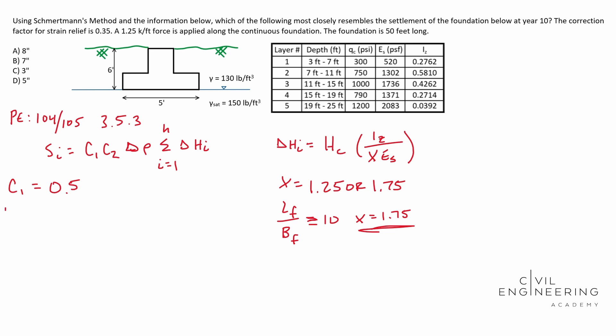C2, we see that there's a formula. It's one plus 0.2 log 10, times your time in years, which is 10 for us over 0.1. Well, when you solve that guy out, you should end up with 1.4. All right.